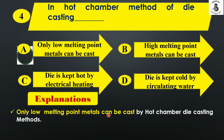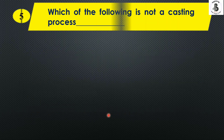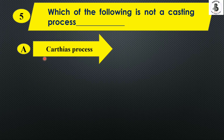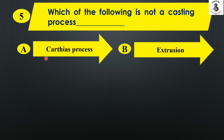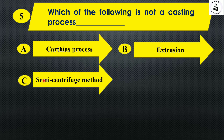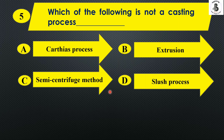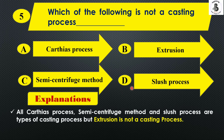Next: which of the following is not a casting process? Option A partius process, option B extrusion process, option C semi-centrifugal method, and option D slush casting process. Basically, extrusion is not considered a casting process — it is considered a forming process. So the right answer is option B.